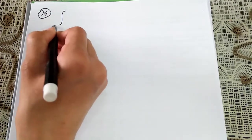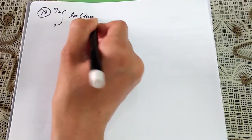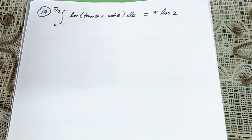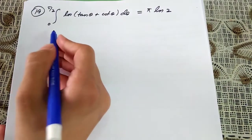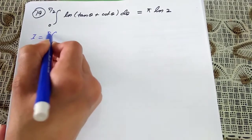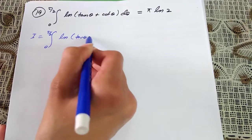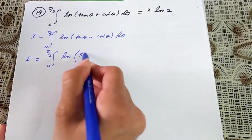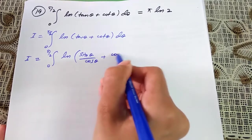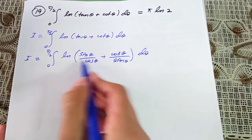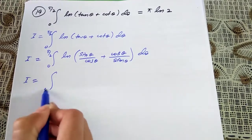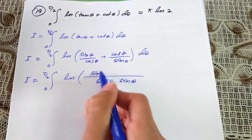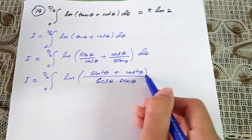Question number 19: integrate from 0 to π/2 of ln(tan θ + cot θ) dθ equals π ln 2. Writing tan θ plus cot θ as sin θ/cos θ plus cos θ/sin θ, and taking LCM gives (sin²θ + cos²θ)/(cos θ sin θ), which simplifies to 1/(cos θ sin θ). So i equals the integral from 0 to π/2 of ln(1 over cos θ sin θ) dθ.